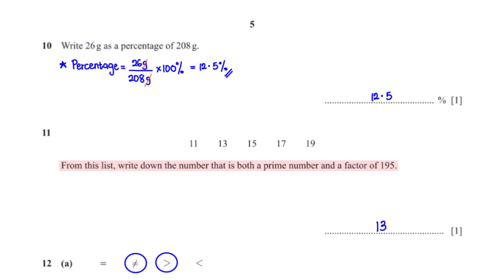From this list, write down the number that is both a prime number and a factor of 195. 13 is a prime number and it is also a factor of 195.